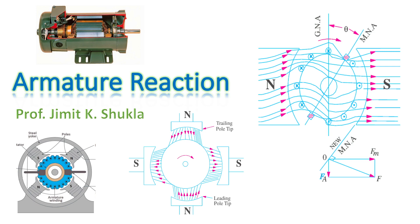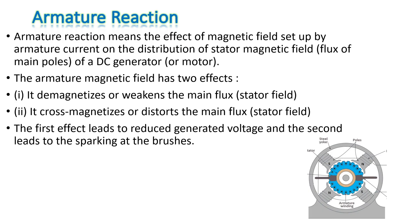We will learn about armature reaction in DC machines in this video. Armature reaction means the effect of magnetic field set up by armature current on the distribution of stator magnetic field or flux of the main poles of a DC machine, be it generator or motor. This armature magnetic field has two effects on the main flux: it demagnetizes or weakens the main flux, and it cross-magnetizes or distorts — that means it changes the direction of the main flux.